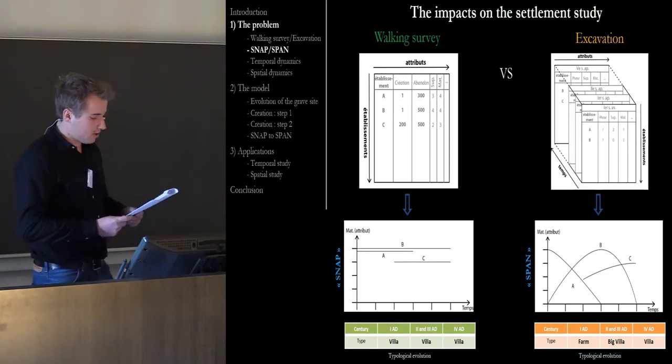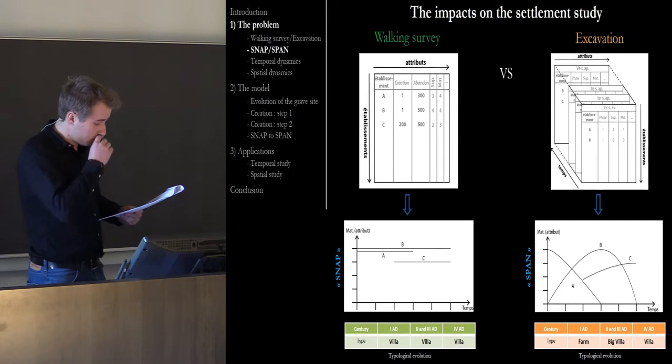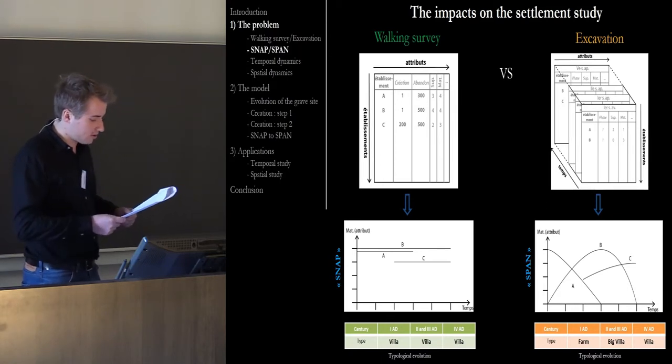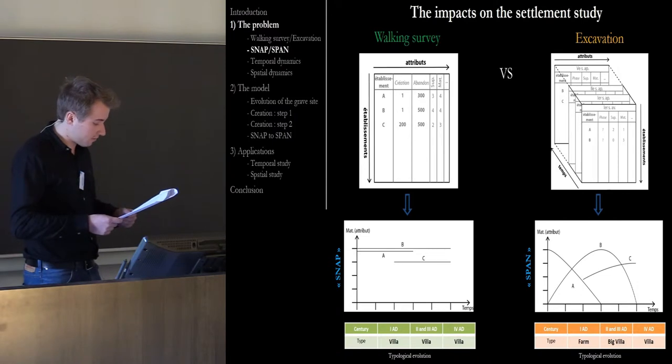What are the consequences of these problems on the study of the spatial dimension of the settlement? To model the organization and the spatial-temporal dynamics of a system of settlement, it is advisable to characterize the present sites in the zone of study. For that purpose, the ideal is to obtain the information on the characteristics of each of the phases for all the occupations.